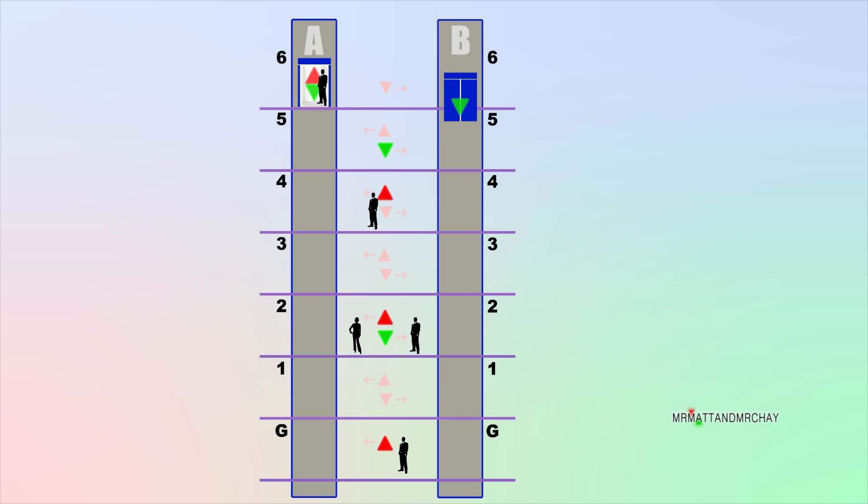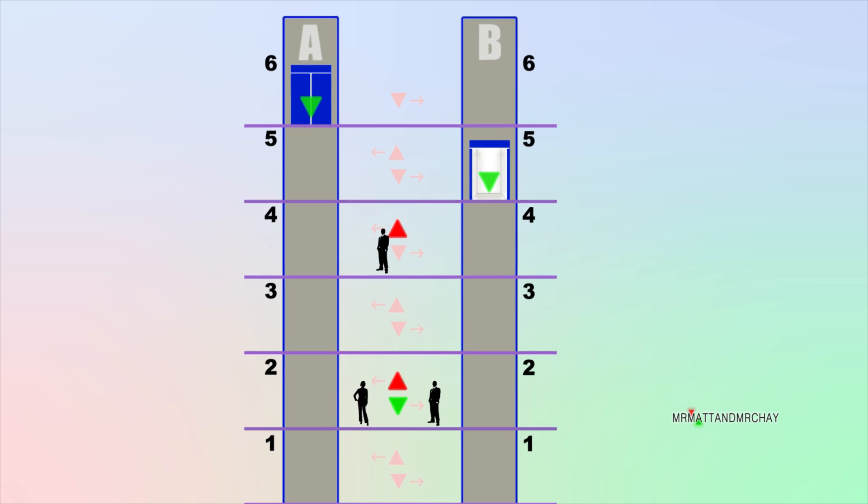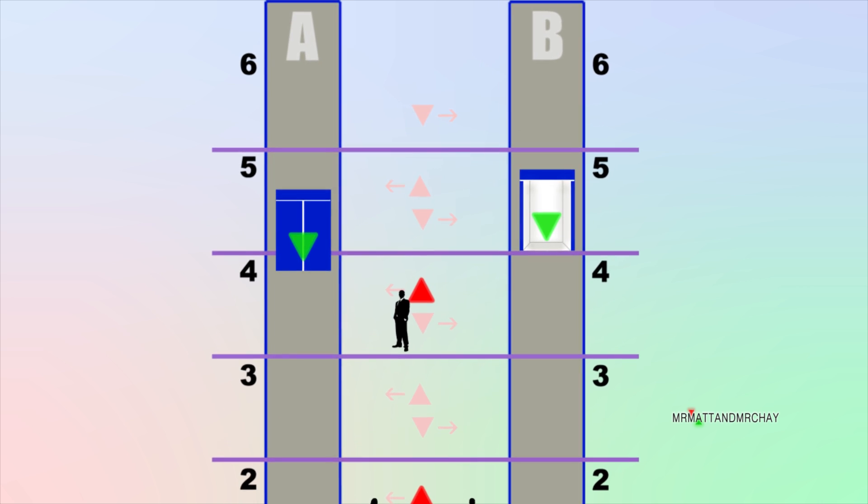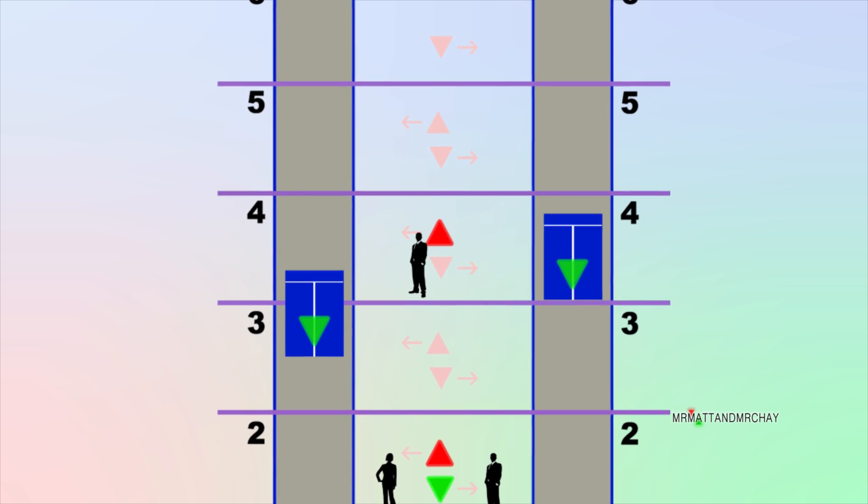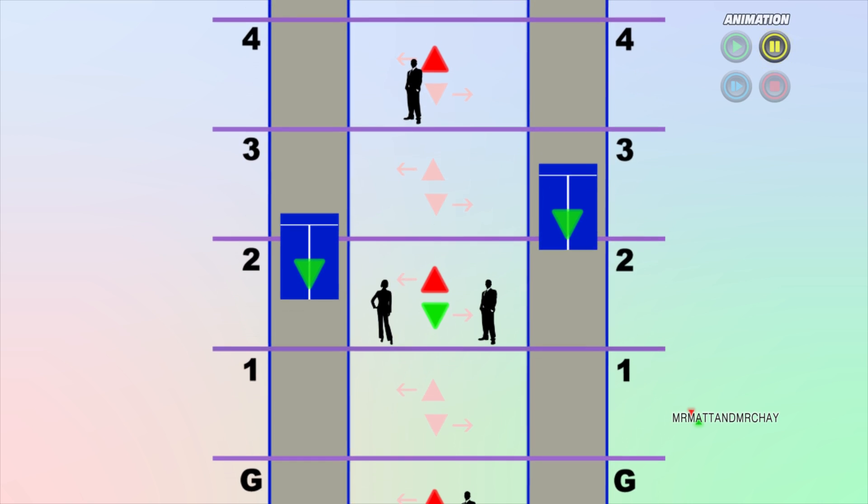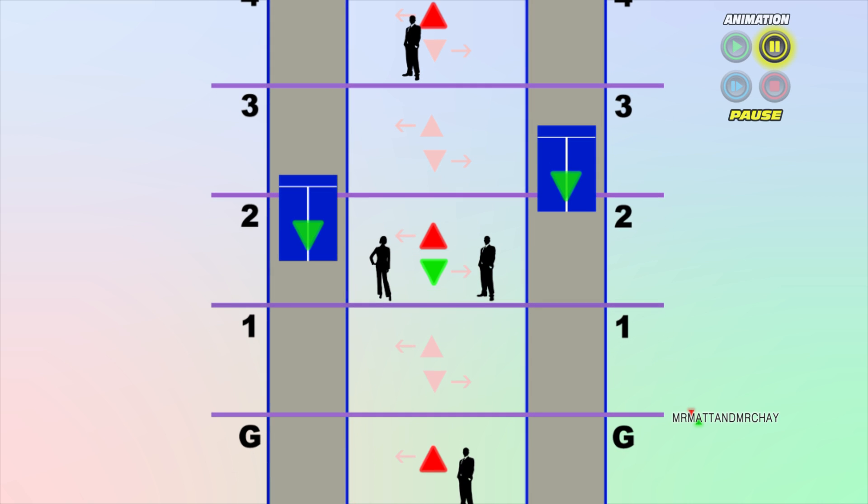So, back to business. Lift B is collecting down calls, whilst lift A is collecting up calls. Lift A is ahead and could collect the down call, but this is the job of lift B.